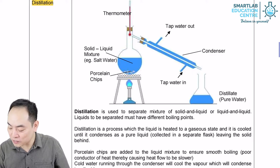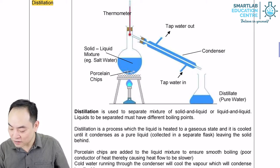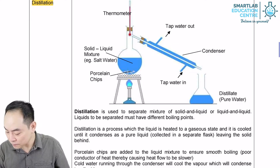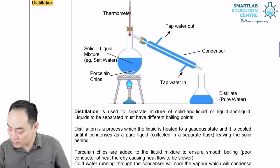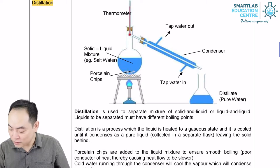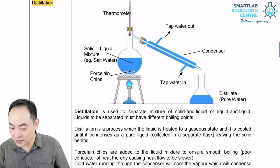This process involves two physical state changes, which are boiling that occurs in the distillation flask and condensation which occurs in the condenser. For the example of a salt solution, the solution is heated so that its liquid component, which is water, evaporates as a vapor. The vapor is then cooled and condensed into a liquid. This liquid is collected in a receiving flask and it is known as a distillate.